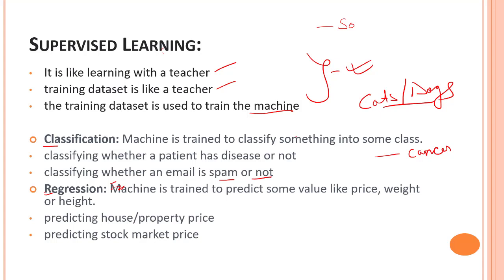Then we have regression. Regression is trained to predict some value like price, weight, or height. If you could recall the housing price problem.